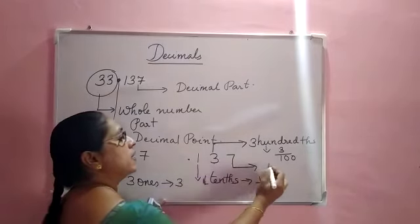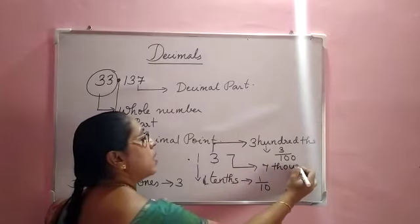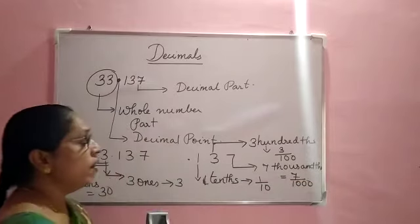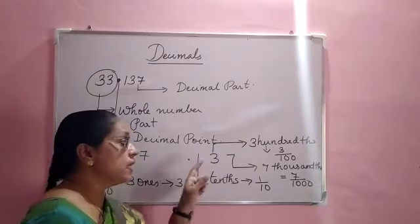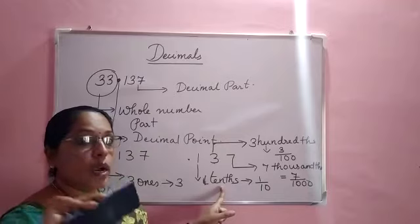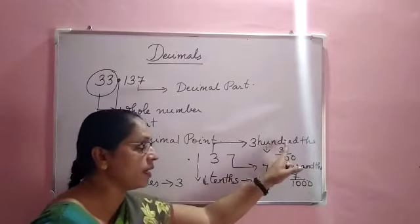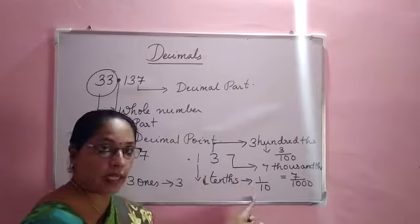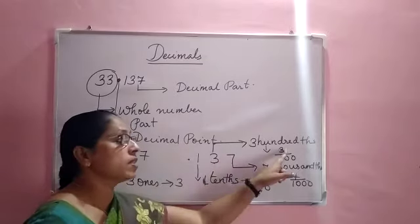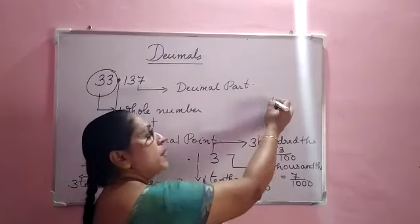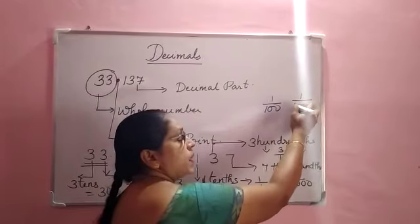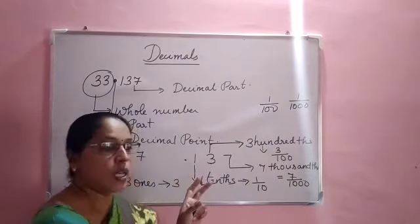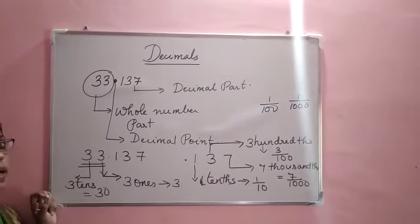Next is the digit 7 in the thousandths place, written as 7/1000. So from left to right after the decimal point, the place values start with tenths — there is no 'oneths' place. It goes: tenths (1/10), hundredths (3/100), thousandths (7/1000). This is the place value of each digit in a decimal number.